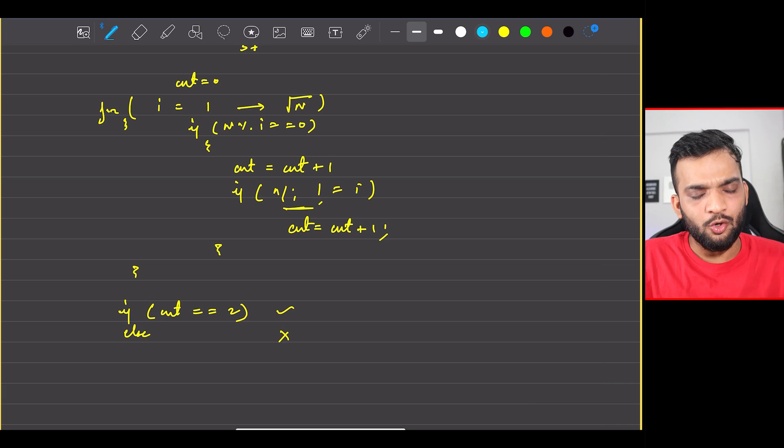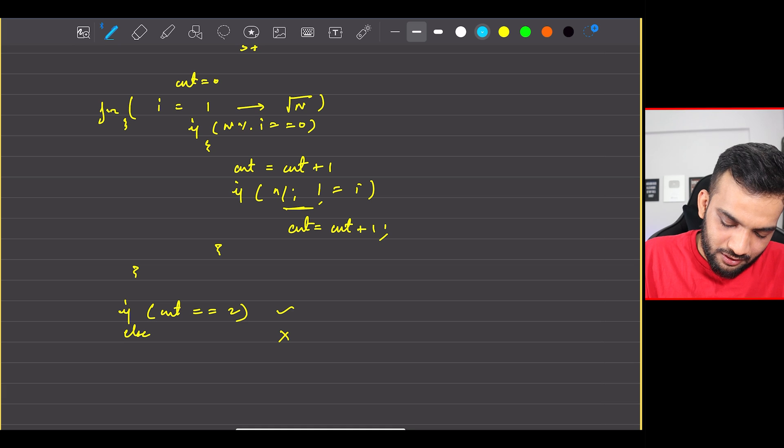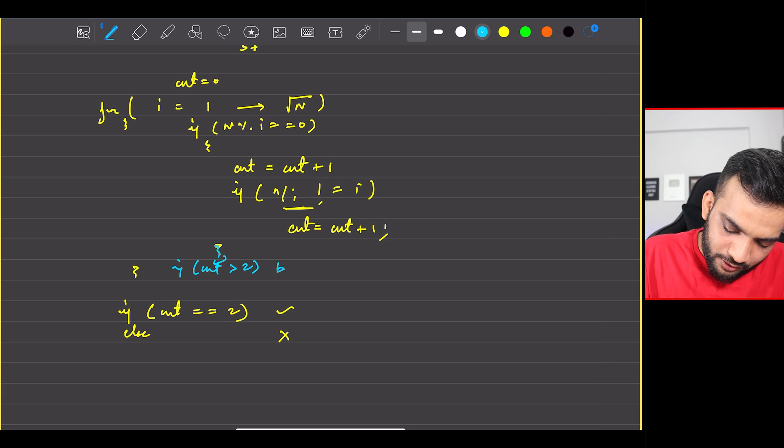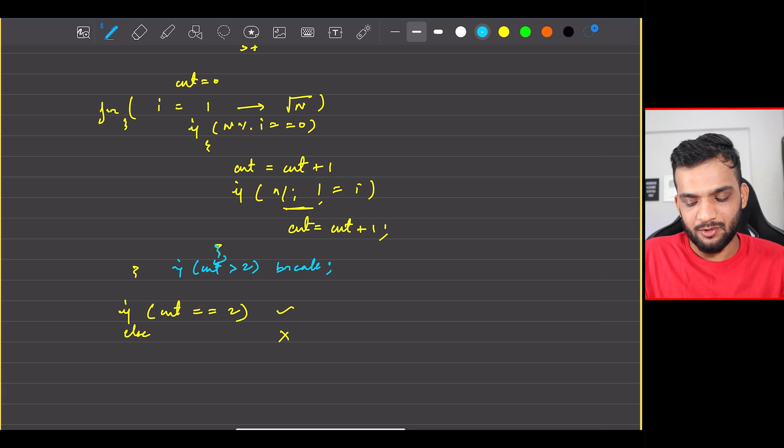You can optimize this - probably right outside the for loop, write if at any moment counter exceeds 2, you can just break out. Because if the counter is exceeding 2, it means it is not a prime number. So why count the other number of divisors? The problem is not to count the number of divisors; instead, it is to say if the number is prime or not.